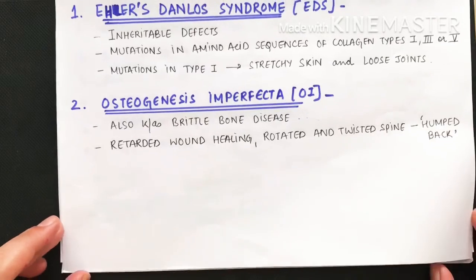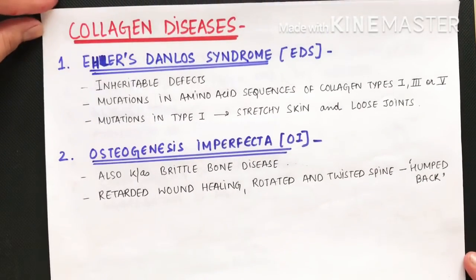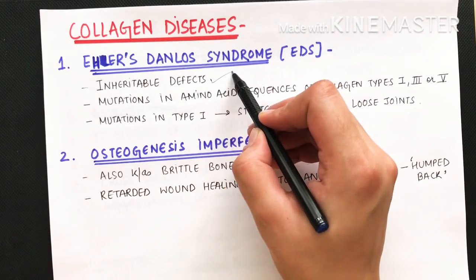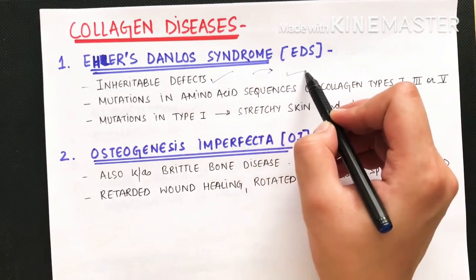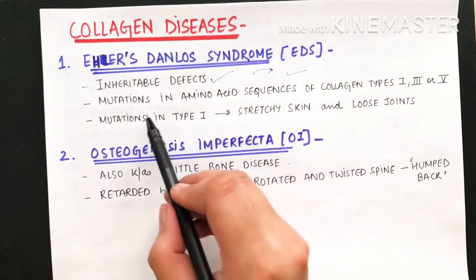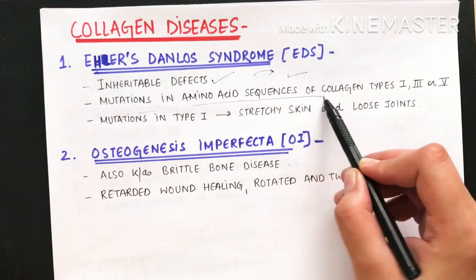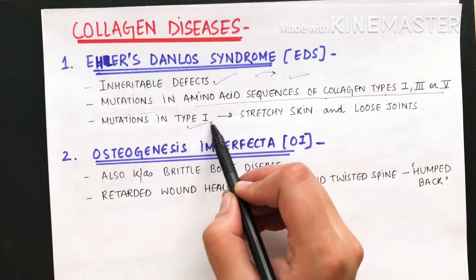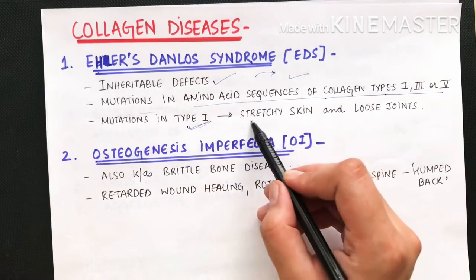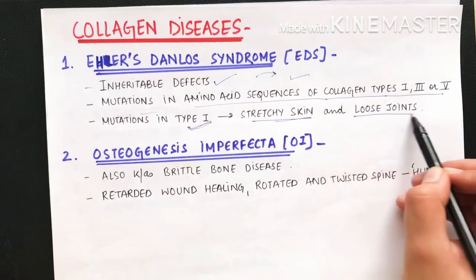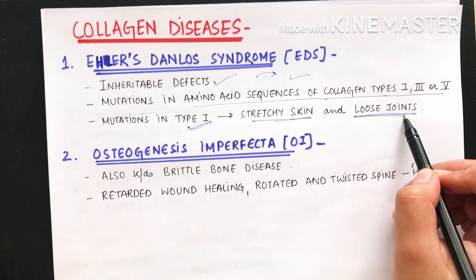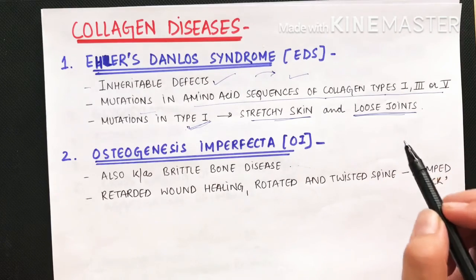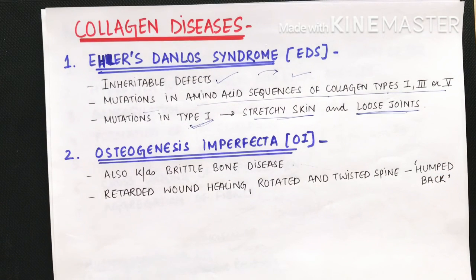Diseases related to collagen: Ehlers-Danlos syndrome (EDS) is an inheritable defect — a mutation in the amino acid sequence of collagen types 1, 3, and 5. In type 1 collagen defect, you see stretchy skin and loose joints — patients suffering from EDS have stretchy skin because collagen doesn't provide proper support.